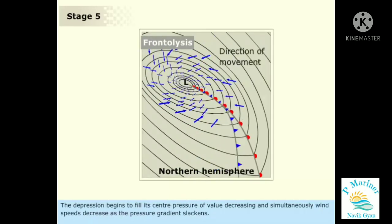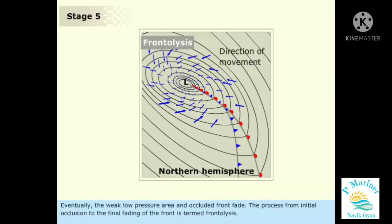The depression begins to fill, its center pressure value increasing, and simultaneously wind speeds decrease as the pressure gradient slackens. The speed of advance of the depression decreases, and it may eventually become stationary with the occluded front pivoting around its center. Eventually, the weak low pressure area and occluded front fade. The process from initial occlusion to the final fading of the front is termed frontolysis.